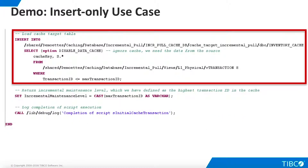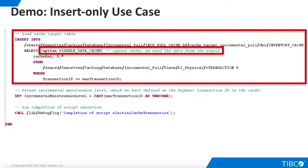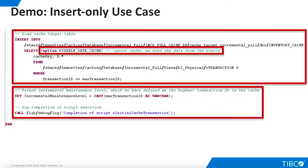We load data from the source into the cache, prepending the cache key retrieved earlier. Note the query hint DISABLE DATA CACHE — this hint tells TDV not to read the source view from the cache and is absolutely essential; without it, we will never see new rows that are not yet cached. If you use the prototype scripts from the User's Guide, check the spelling of these hints carefully since those prototypes are not actual running examples. Finally, set the new incremental maintenance level, log completion, and the script is done.